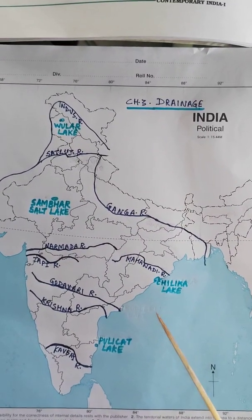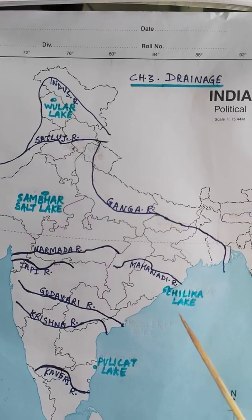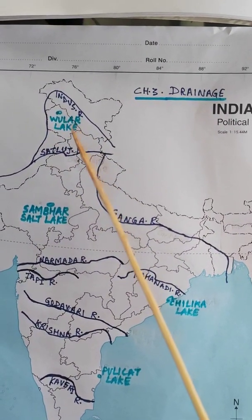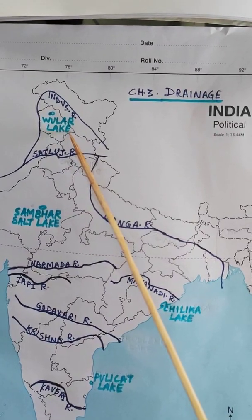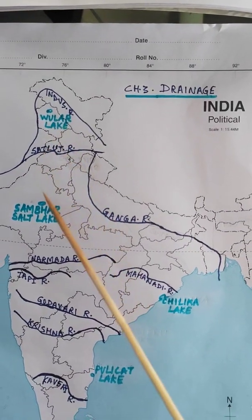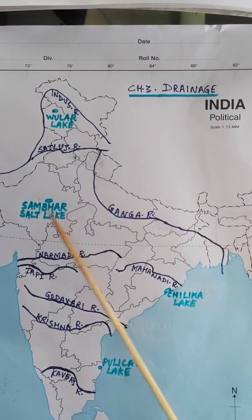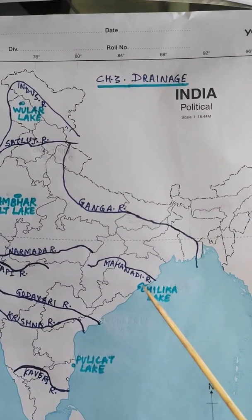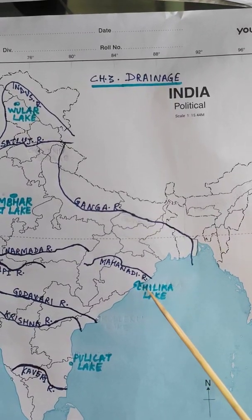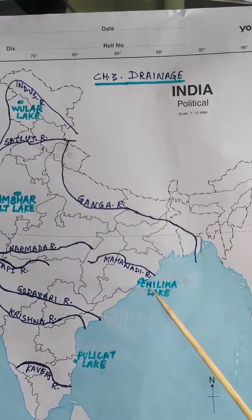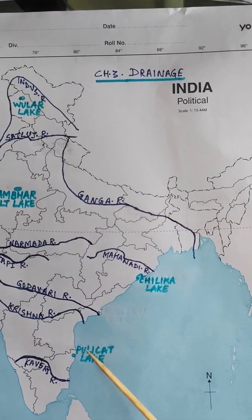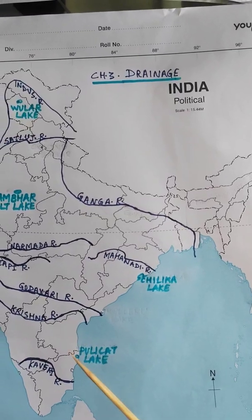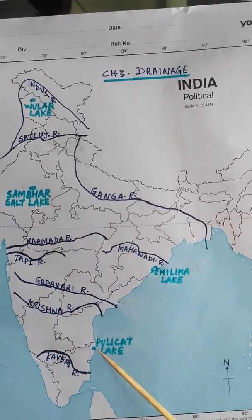You will not be asked to draw the river in the exam, but you may be asked to locate and label these lakes: Wular Lake which is in Jammu and Kashmir, Sambhar Lake of Rajasthan - a saltwater lake - and then Chilika Lake. There is a dent on the coastline that identifies Chilika Lake, which is a lagoon and a saltwater lake. Then Pulikat Lake, which you have to mark in Tamil Nadu, not in Andhra Pradesh.